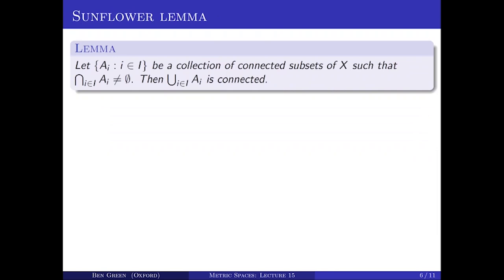Now we'll look at a few basic properties of connectedness. The first one we'll call the sunflower lemma, because of the setup it describes. We take a collection of connected subsets of X, called Aᵢ where i ranges over some indexing set I. Suppose that the intersection of all of these is non-empty — you can think of there being a central point, and these sets all contain that central point, looking a bit like a sunflower. The claim is that the union of all those sets is connected as well.